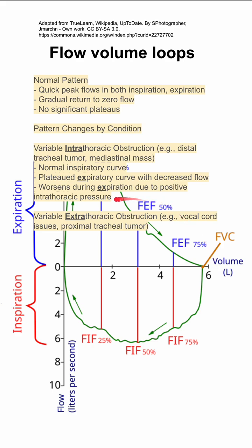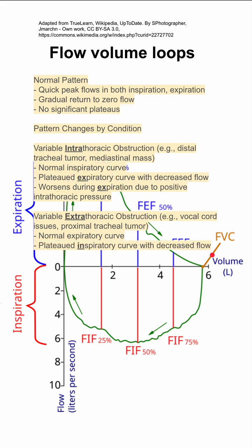This worsens with expiration because we have positive intrathoracic pressure. On the other hand, if you have a variable extrathoracic obstruction — such as a vocal cord issue or a proximal tracheal tumor — you'll have a normal expiratory curve and a plateaued inspiratory curve. This inspiratory curve will have decreased peak flow and will plateau, cutting across the middle.